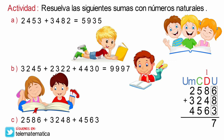Continuamos sumando los elementos de la columna de las decenas: 1 que llevamos más 8 es igual a 9, 9 más 4 es igual a 13, y 13 más 6 es igual a 19. Escribimos el 9 y llevo 1, que lo escribimos encima de la columna de las centenas.